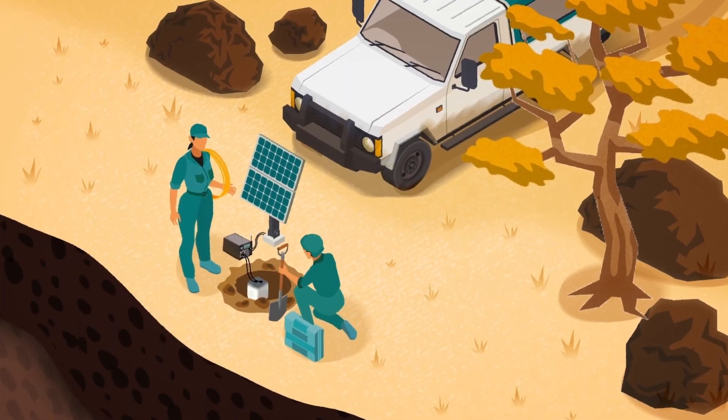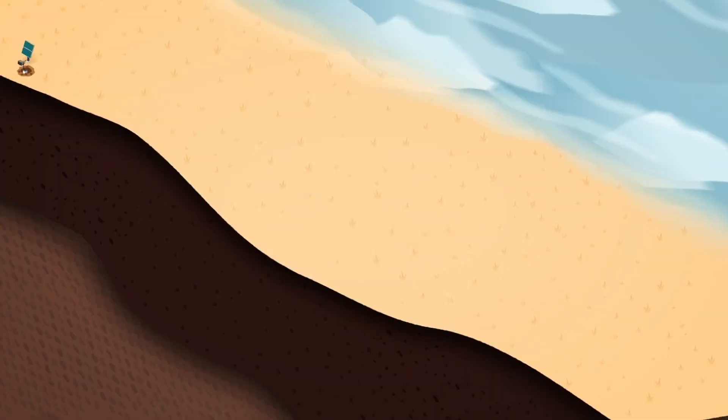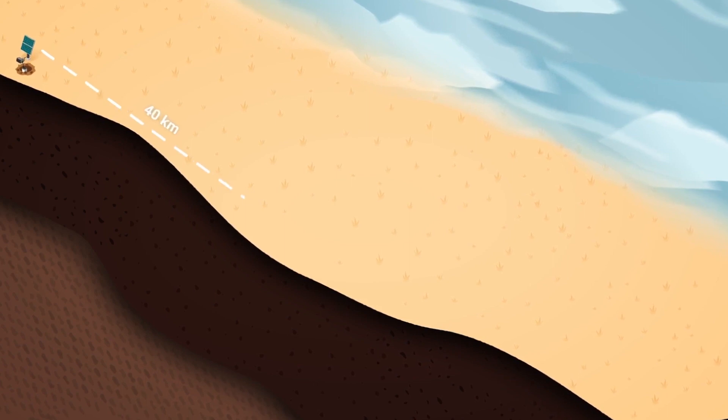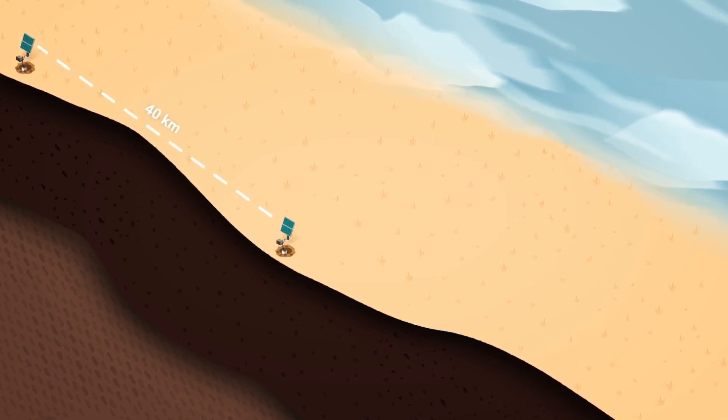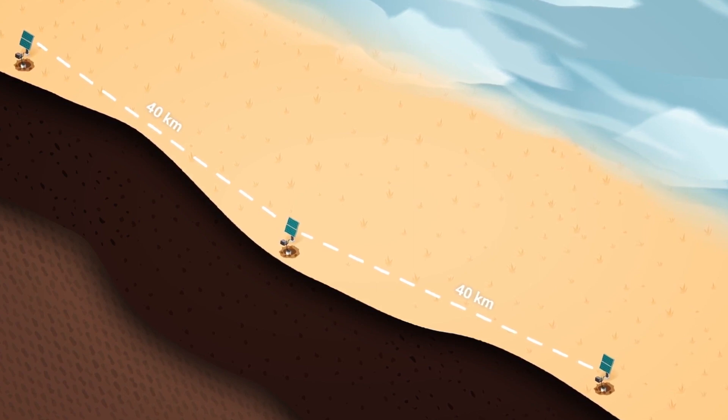WA Array is a network of small, temporary seismic stations that will be placed across the state's surface to record vibrational energy travelling through the Earth. This data will be analysed to image WA's deep subsurface.